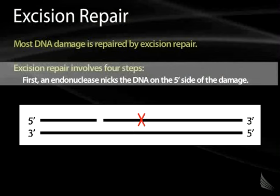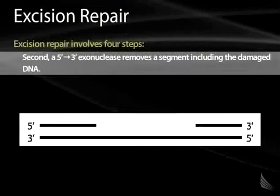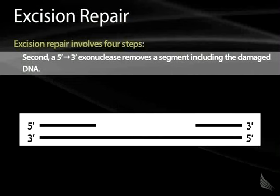The first thing that happens is there's an endonuclease — an enzyme which cuts DNA — and this creates a nick in the DNA on the five prime side of the damage. Second, there's a five prime to three prime exonuclease, which removes individual bases in the five prime to three prime direction. This will remove a segment of nucleotides including the damaged DNA.